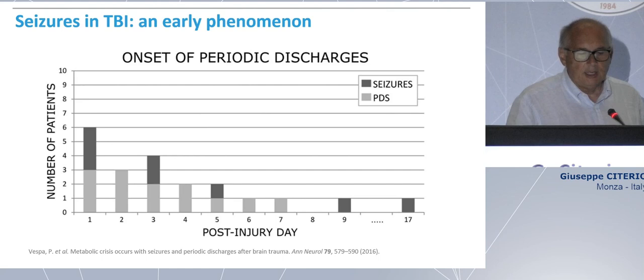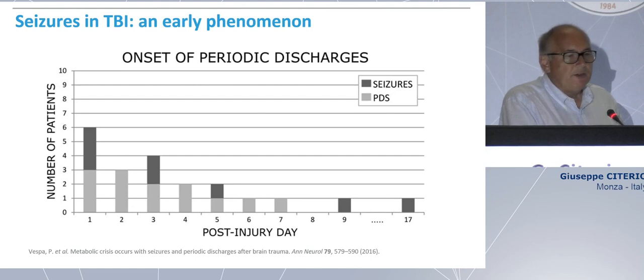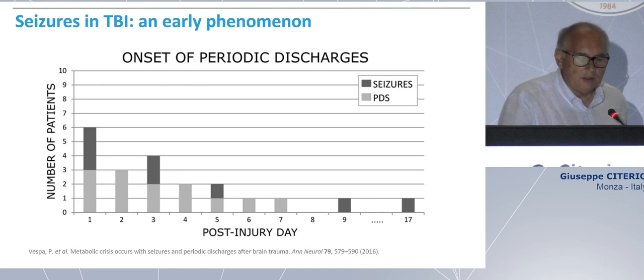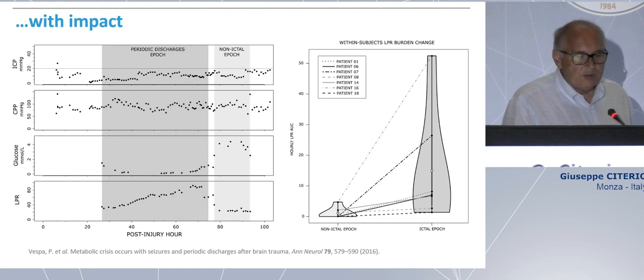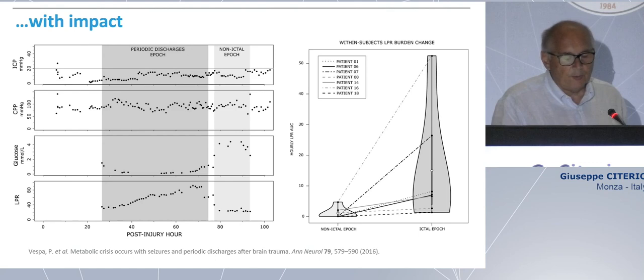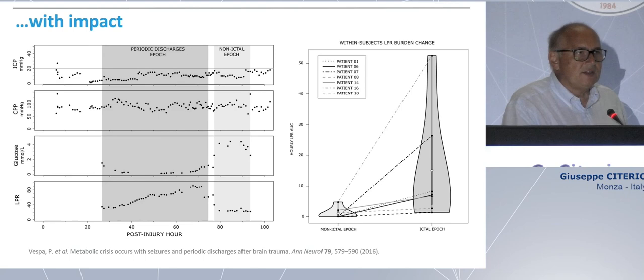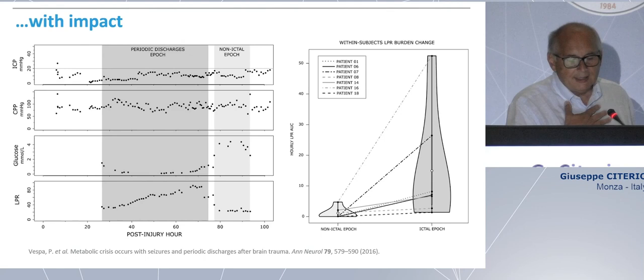The phenomenon of having a seizure is an early phenomenon linked to the presence of new masses, hematoma, and so on. We can think of the first week as a time window in which seizures are more frequent. Then we have also seizures later on, but focusing on intensive care, it's the first week in which we focus. And if we look at metabolism, what is happening inside the brain, this is a study from Paul Vespa with macular dialysis looking at the effect of having seizures in intensive care. The lactate pyruvate ratio went up. There was a metabolic crisis during the seizure.